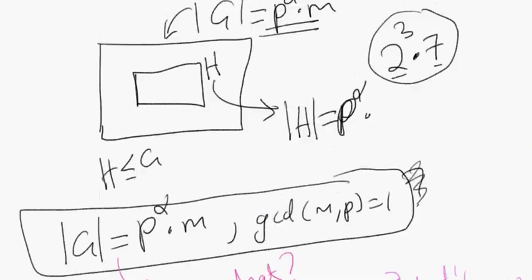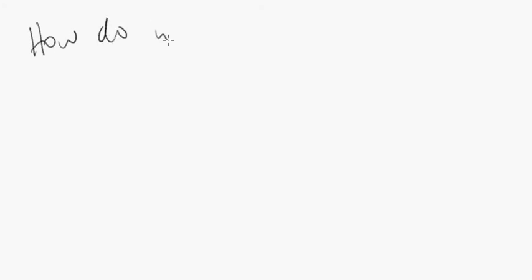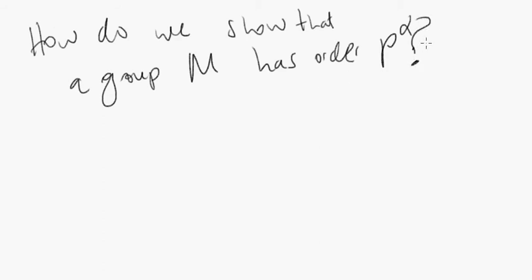So where do we start? It's typically a good idea to start with the question we're trying to prove. Let's ask: how do we show that a given group has order p to the alpha? More generally, how do we show that a group — call it H or M or whatever — has any given order?